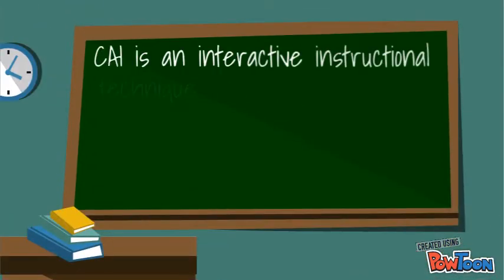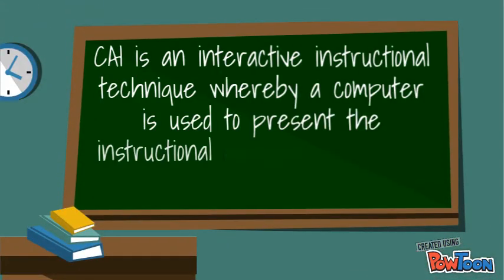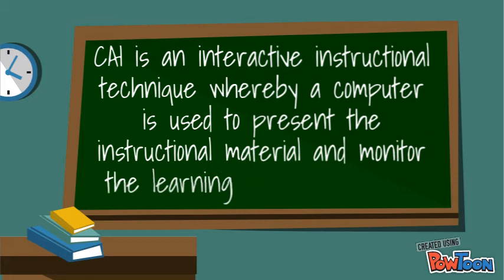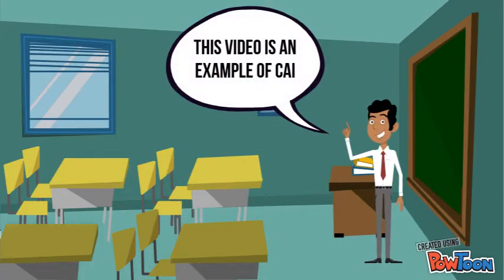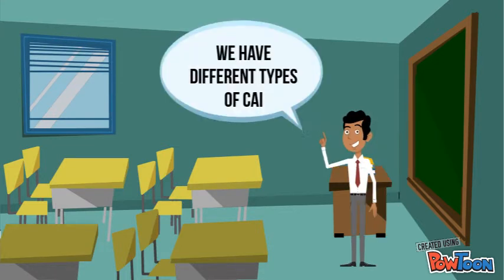CAI is an interactive instructional technique whereby a computer is used to present the instructional material and monitor the learning that takes place. This video is an example of CAI. We have different types of CAI.